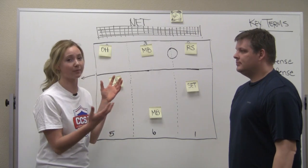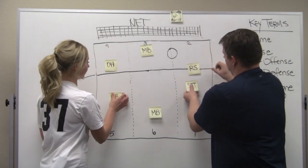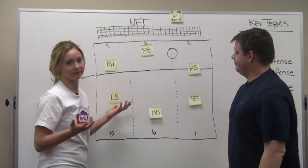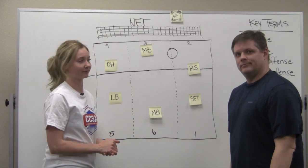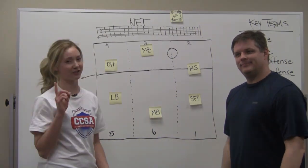So when the ball is sent back over the net, everyone just drops back to their base defense. It's as simple as that. There you go. That's serve-receive out of rotation one.